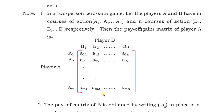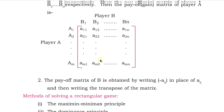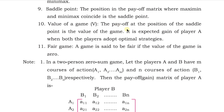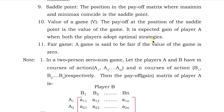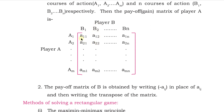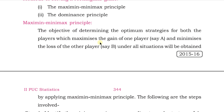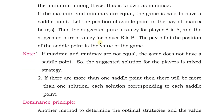Once you have identified the maximin and minimax, see where those two values coincide. Suppose your maximin and minimax both equal seven — they coincide at a particular point in the matrix. That point is called the saddle point, and the number at that position is called the value of the game. It is the expected gain of player A when both players adopt their optimal strategies — for example, player B adopting B2 and player A adopting A2.